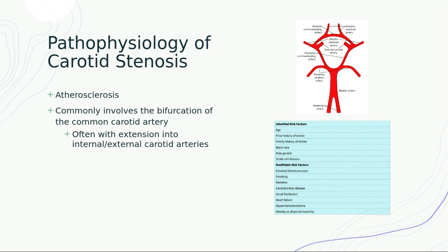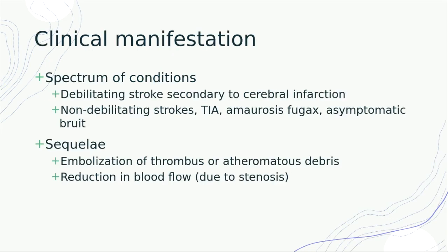Looking at the anatomy of the cerebral circulation and clinical manifestations of carotid artery disease: carotid artery stenosis is a spectrum of conditions. It can range from non-debilitating strokes, TIAs, amaurosis fugax, or asymptomatic bruit all the way up to debilitating strokes secondary to cerebral infarction. The sequelae are often embolized thrombus or debris, or a reduction in blood flow leading to stroke.